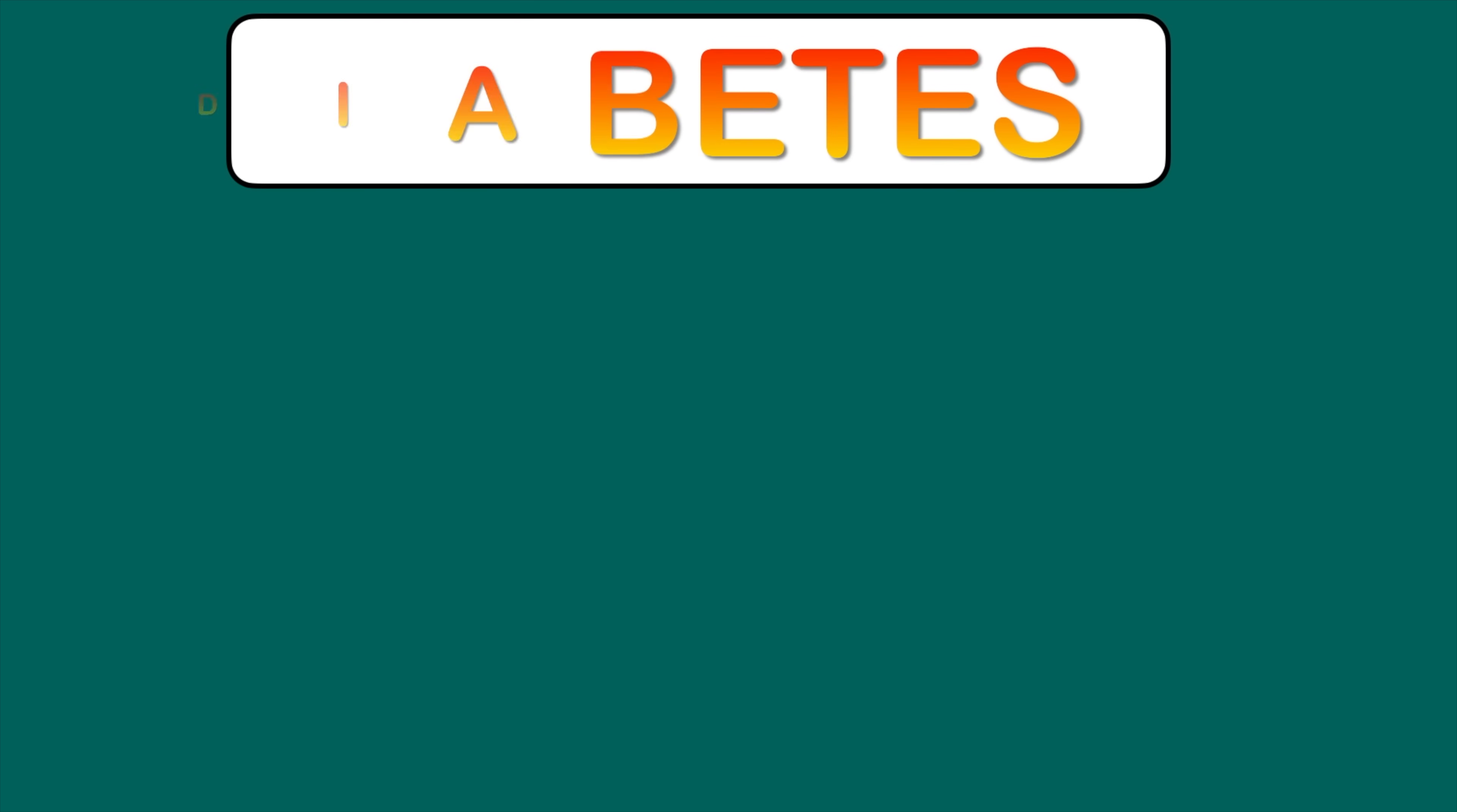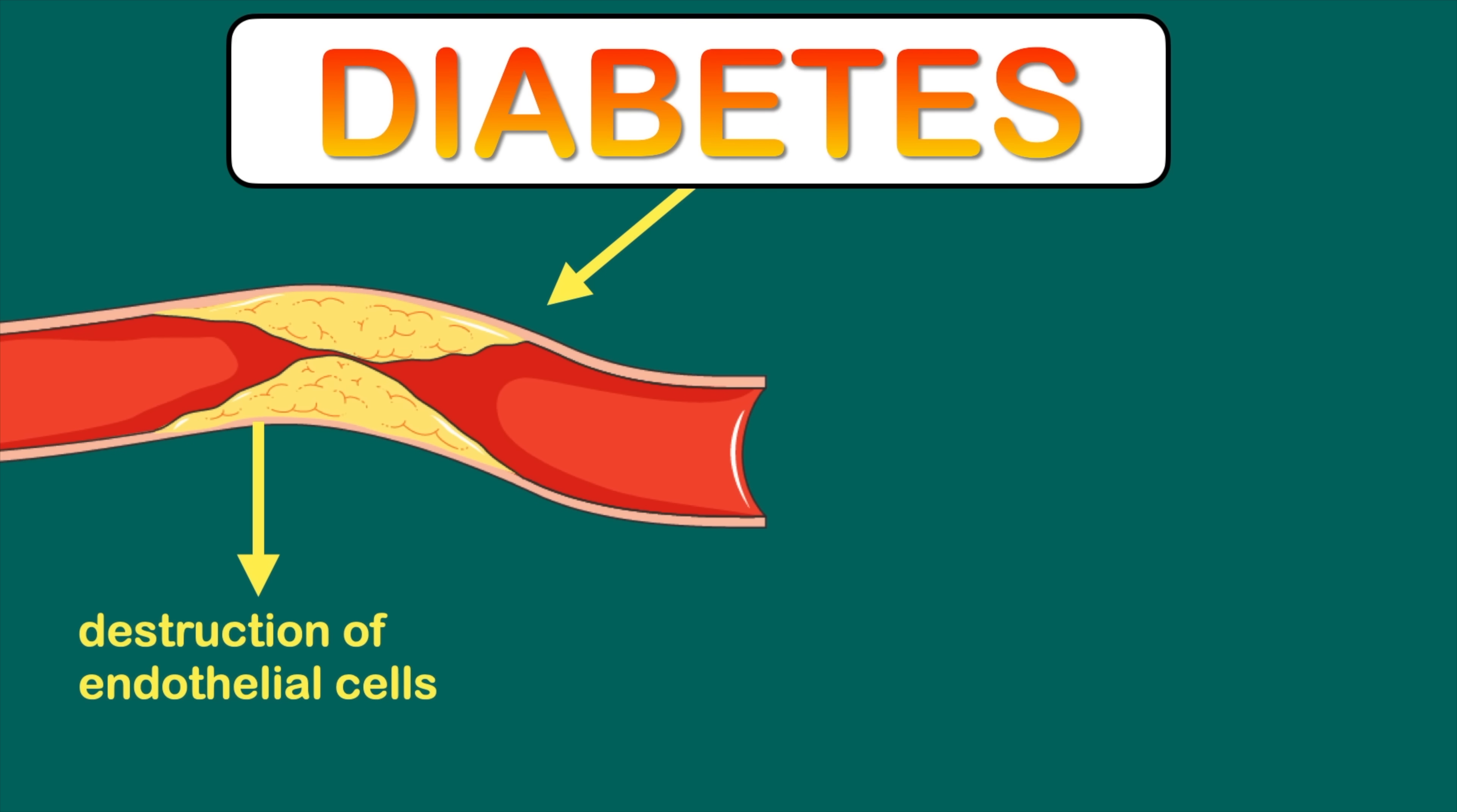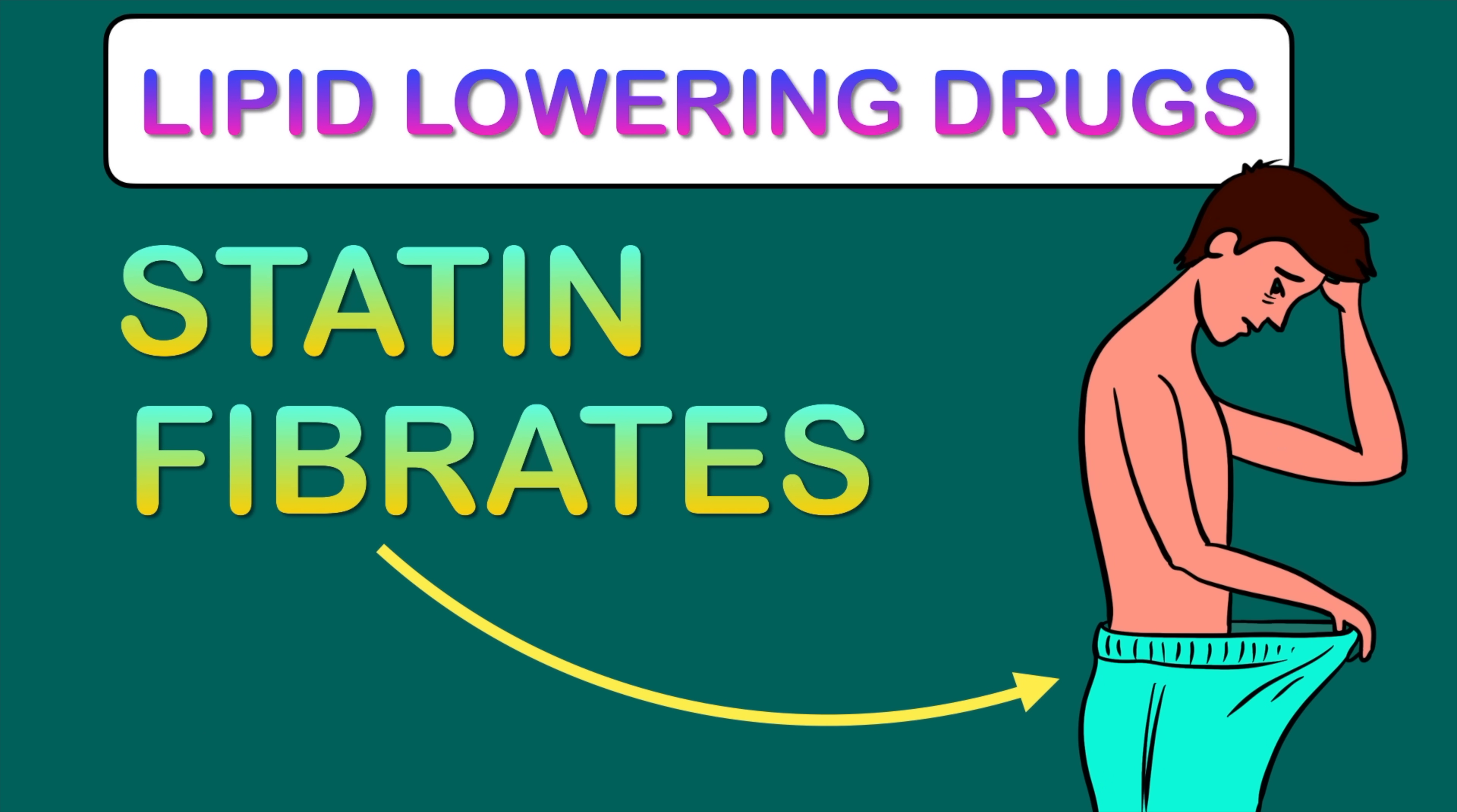Diabetic patients are more prone to erectile dysfunction. This is because of the destruction of endothelial cells present inside your blood vessels. These endothelial cells are the main source of nitric oxide in your body. On the other hand nitric oxide increases insulin sensitivity which is essential to control diabetes. Also remember some lipid lowering drugs like statins and fibrates can also cause erectile dysfunction.